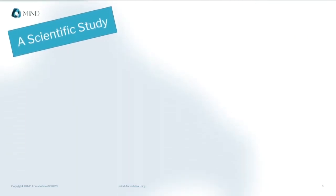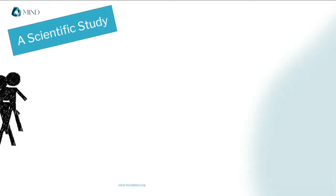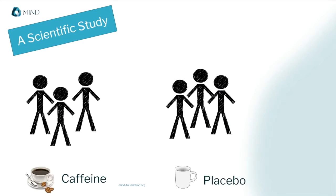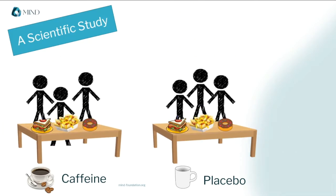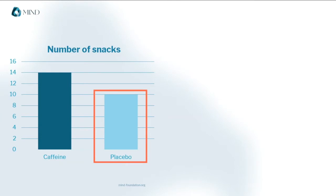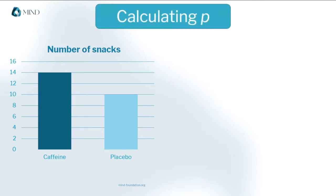Let's say I'm a scientist and I think caffeine makes people hungrier, and I want to test that in a study. So I bring people into my lab and I give half of them a big dose of caffeine and the other half an inactive placebo. Then I give them each a bunch of snacks and I see which group eats more food. I observe that on average the caffeinated group ate 14 snacks each and the placebo group ate 10. And now I want to know if this difference in my data reflects a real difference in the world outside of my lab, so to find out I have to calculate the p-value based on my data.